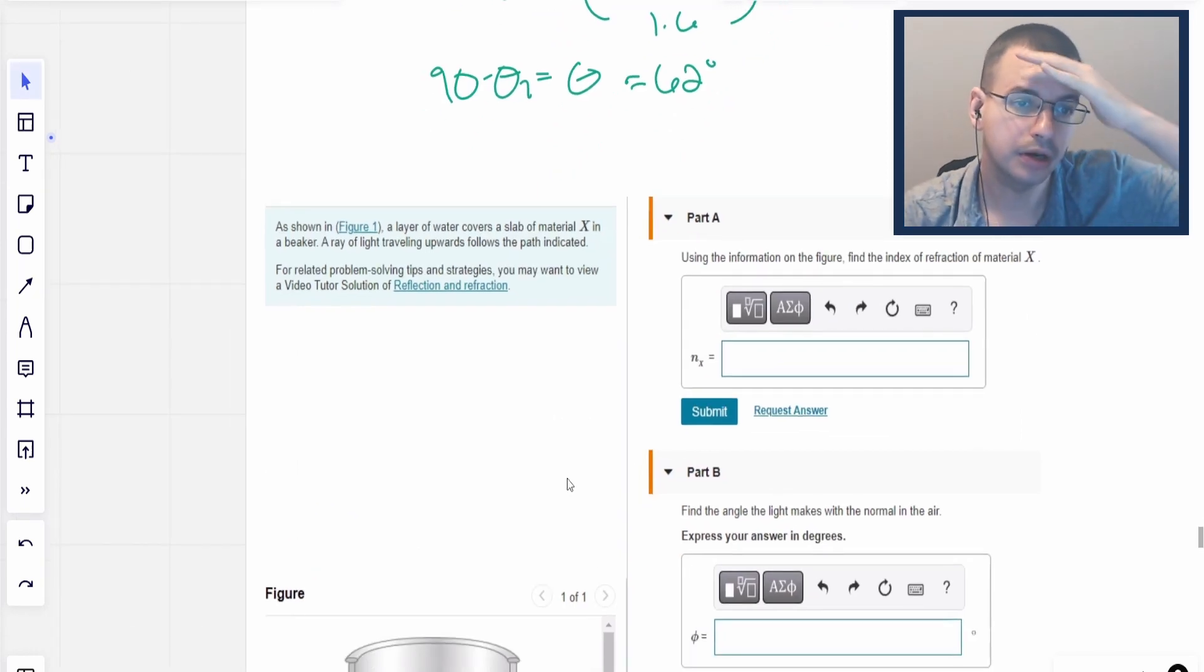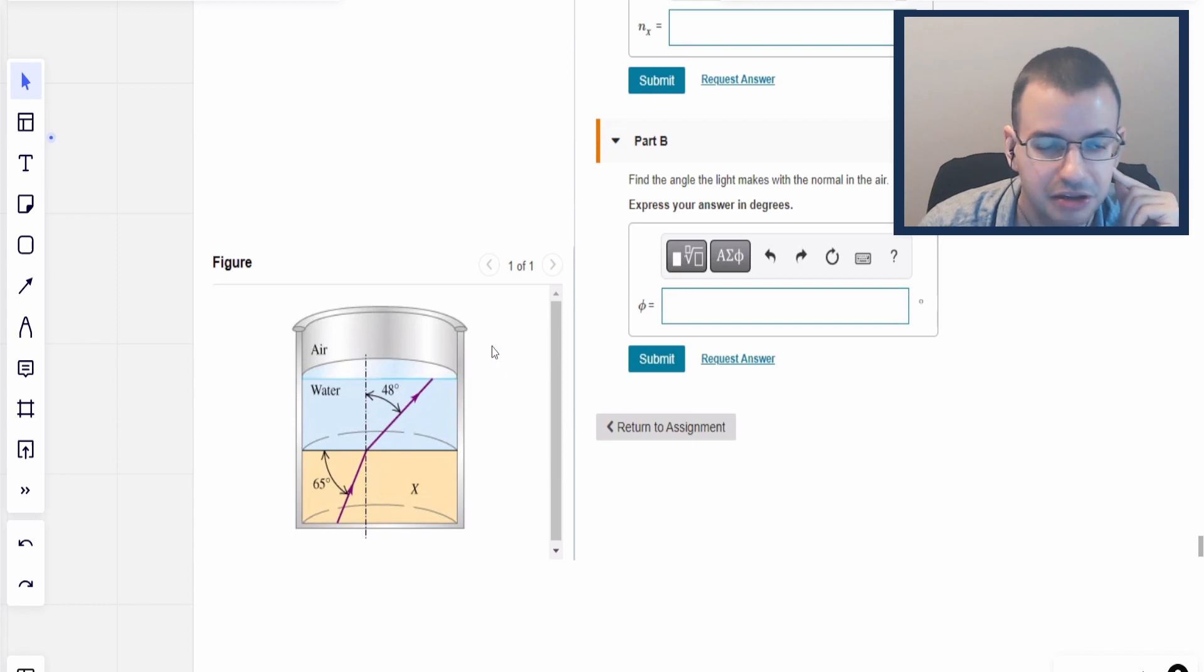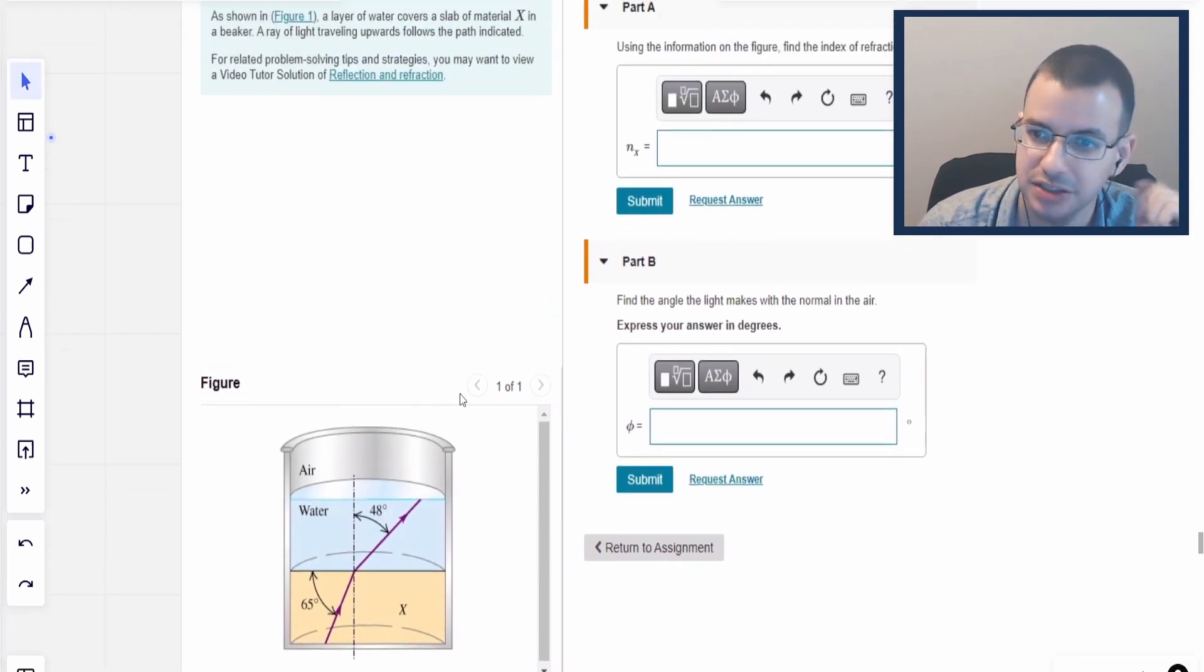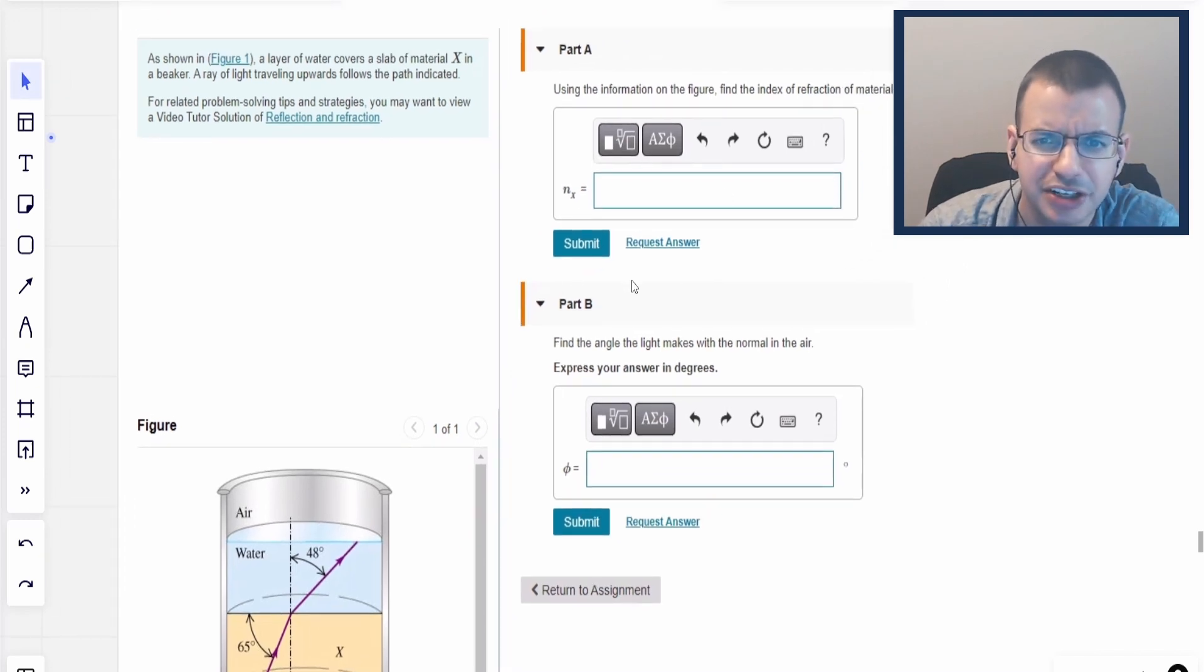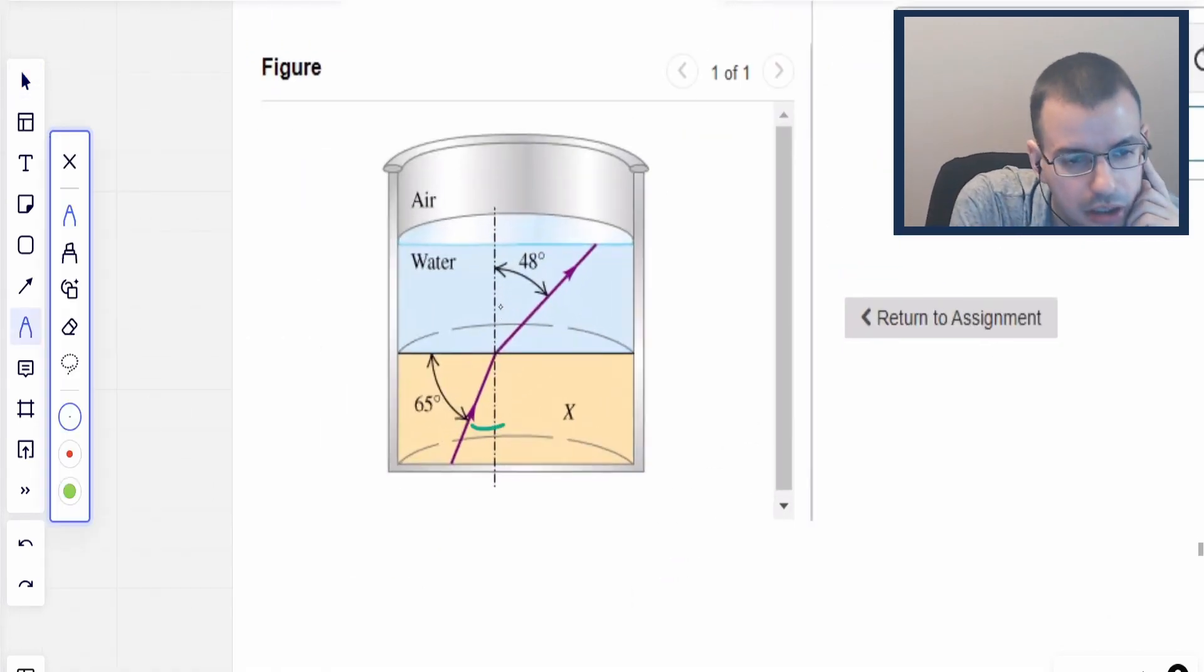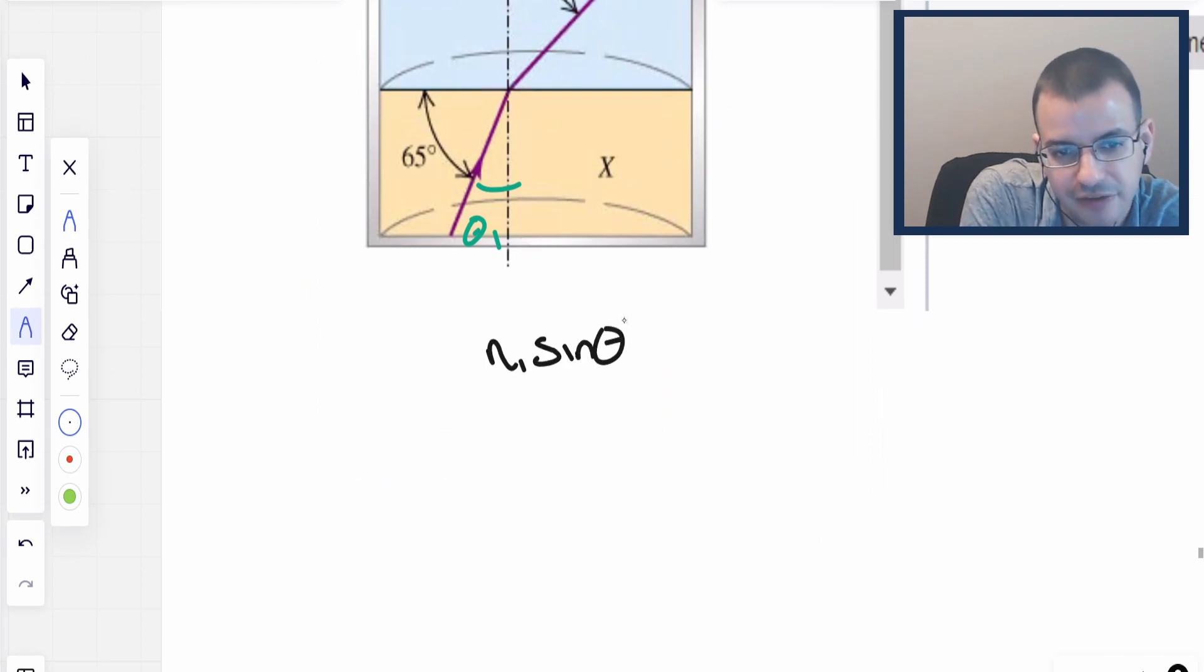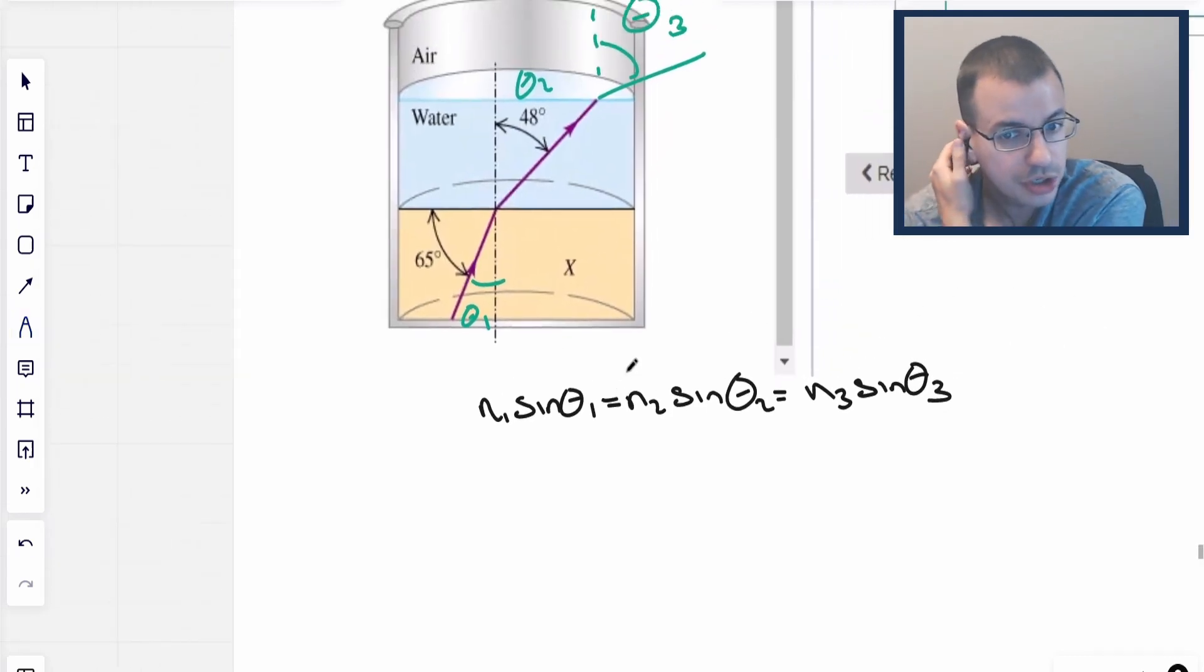A layer of water covers a slab of material X. The peak of a ray of light travels upwards, follows the path indicated. Find the index of refraction of the material, mystery X. So I'm going to start with the bottom here. This will be theta 1. This will be theta 2. And then when it bends again, this will be theta 3. So we have 1, 2, 3 angles. We're going to use Snell's law. So N1 sine of theta 1 equals N2 sine of theta 2, which we can also throw in N3 sine of theta 3.